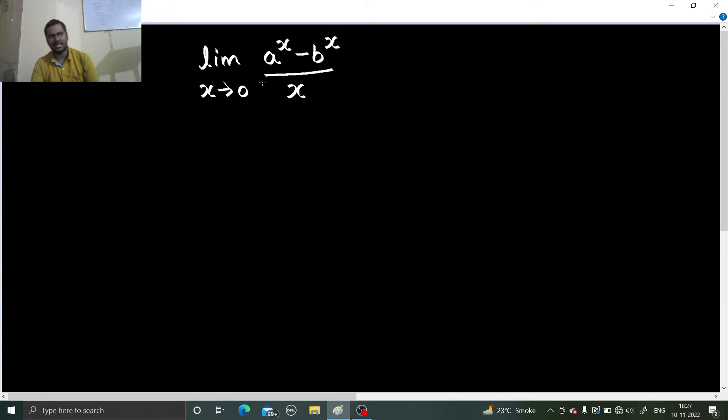So whenever you are seeing a power x exponential type, in limits we have a formula: limit x tending to 0, a power x minus 1 divided by x is log a to the base e. Fine, so we have this formula.